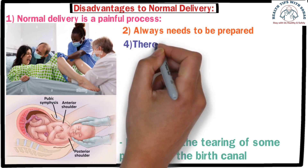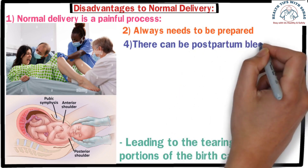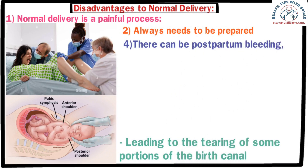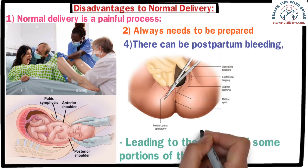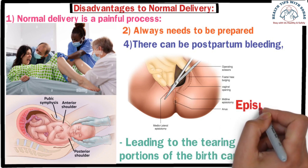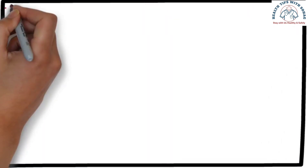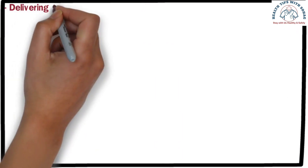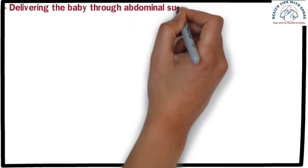Number four: until the placenta is delivered after normal delivery, there can be postpartum bleeding, which can be harmful to the mother. Number five: in some cases an episiotomy might be necessary, where an incision is made in the perineal area to ease the baby's passage — this procedure may also require stitches. Now let's discuss how a caesarean delivery is performed. Caesarean delivery, also known as C-section, involves delivering the baby through surgical means by making an incision in the mother's abdomen.